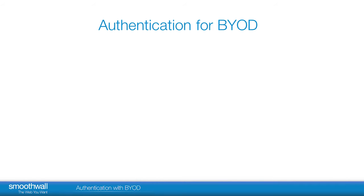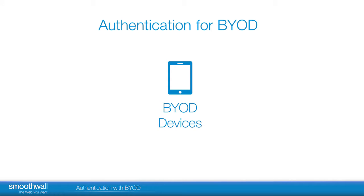Authentication for BYOD. The Smoothwall makes use of RADIUS accounting to allow users to connect and authenticate their own wireless devices to the network, known as Bring Your Own Device, or BYOD. This has the added advantage of not having to install additional software on the user's device. The Smoothwall links your organization's directory service to its RADIUS server.